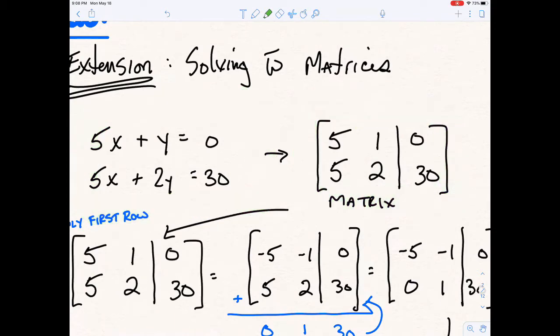This is considered a two by three matrix, two rows and three columns.